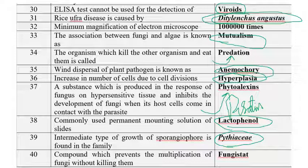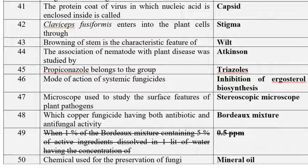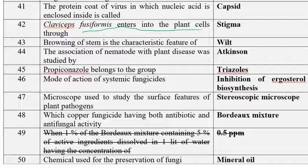The protein coat of a virus in which nucleic acid is enclosed is called a capsid. The capsid is the outer protein coat of the virus. Claviceps fusiformis enters into the plant cells through the stigma. It causes ergot of rye disease.